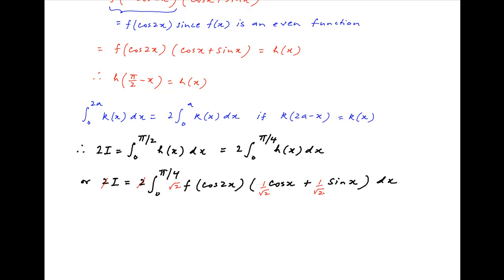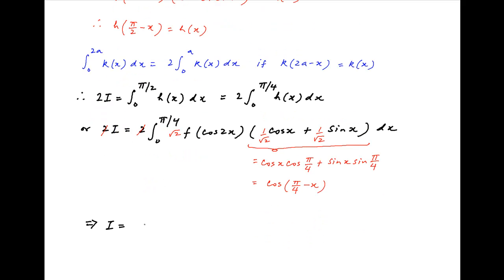Substituting the value of h(x), we get 2 times integral 0 to pi upon 4 of f(cos 2x)·(cos x plus sin x) dx. Multiplying and dividing the integrand by root 2, and noting that cos(x)/root 2 plus sin(x)/root 2 equals cos(x)·cos(pi upon 4) plus sin(x)·sin(pi upon 4), which equals cos(pi upon 4 minus x). Therefore I equals root 2 times integral 0 to pi upon 4 of f(cos 2x)·cos(pi upon 4 minus x) dx.